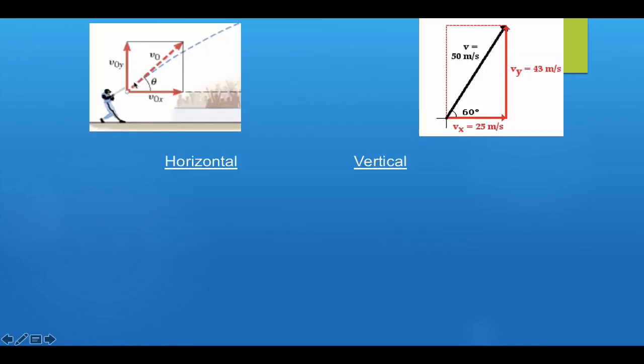Angled launches are tougher because the initial velocity has both horizontal and vertical components. The first thing we need to do is break down the initial velocity using right triangle trigonometry and SOH CAH TOA. If the angle is relative to the horizontal, the x component equals the initial velocity times cosine of the angle, while the vertical component equals the initial velocity times sine of the angle.